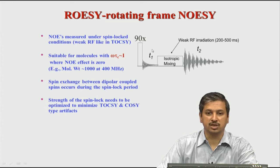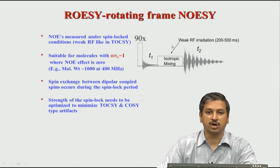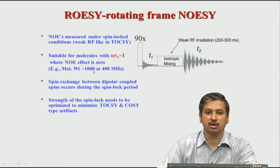ROESY provides the same information as NOESY — the intensity of the cross peaks is inversely proportional to r^6, where r is the distance between two atoms. Similar to NOESY, we choose a mixing time, measure the intensity of cross peaks from the spectrum, and calculate the distance. For example, an average amino acid residue in a protein is about 100–110 Da, so a 1000 Da molecule corresponds to a 9-amino-acid peptide. If your peptide is 9 to 10 amino acids and you are working at 400 MHz at room temperature, you are highly likely to get no useful NOESY signal — therefore use ROESY.